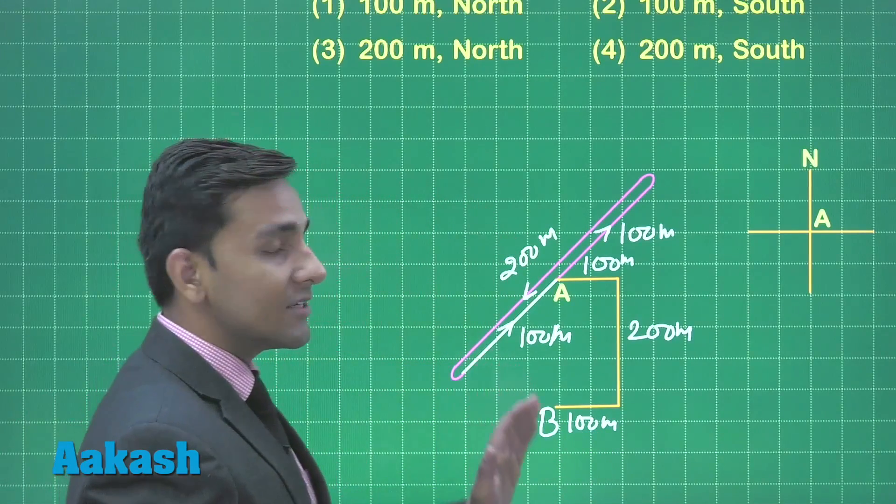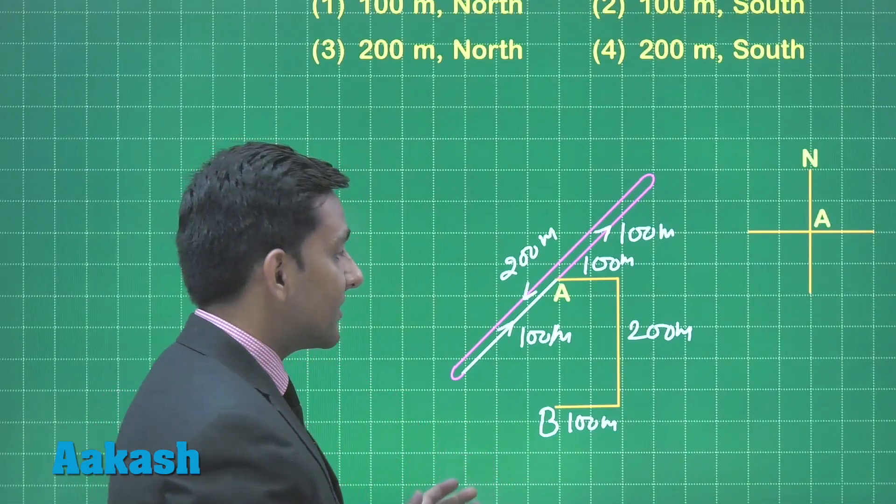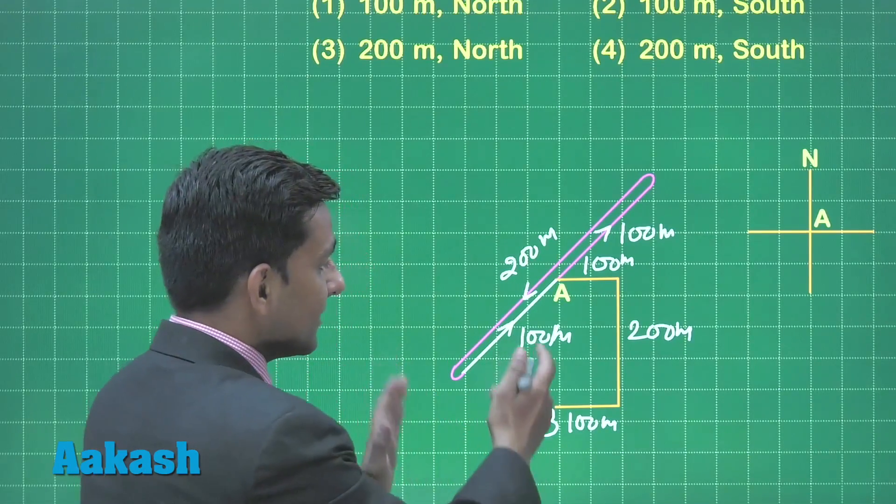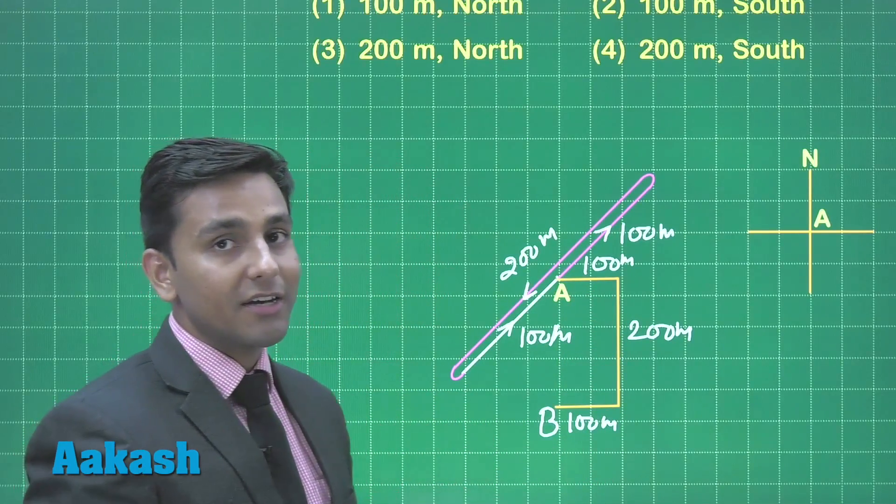Now we have to find the distance of this person from point B and its initial position and the distance is here 200 meter. Here we can see that the distance between point A and B is 200 meter and direction is south.